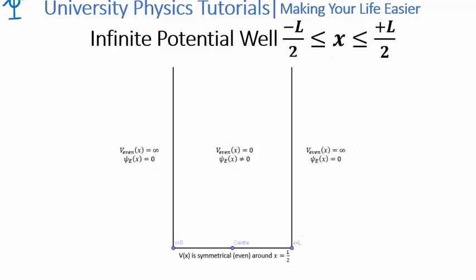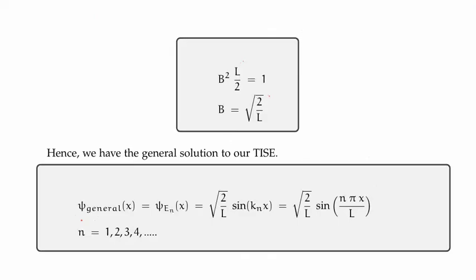So what were the solutions that we derived in the previous video? We saw that the wave functions for a particle living in an infinite potential well extending from x equal to 0 to L were given by the square root of 2 over L times the sine of n pi x over L, where n is an integer known as the principal quantum number, and this is what stipulates the quantization of energy.